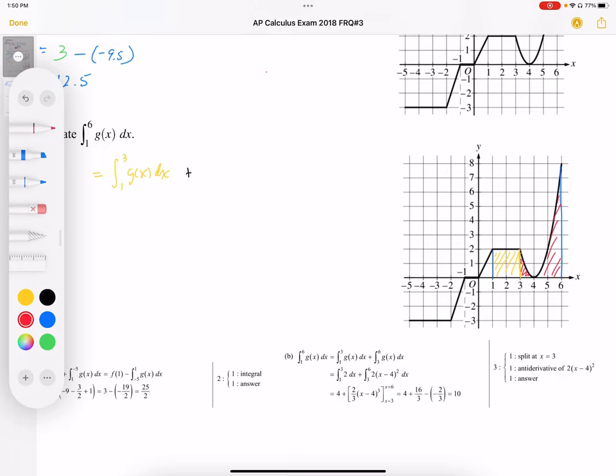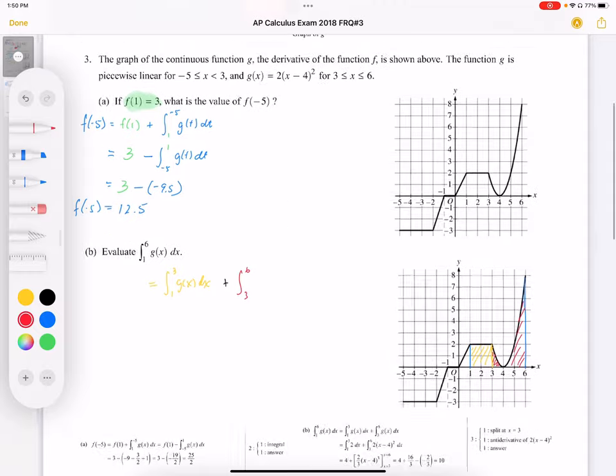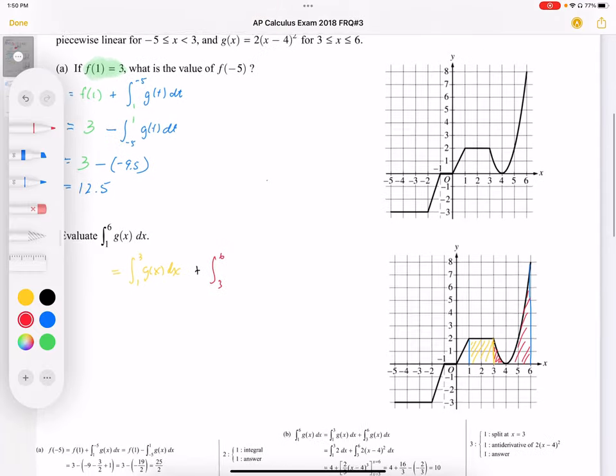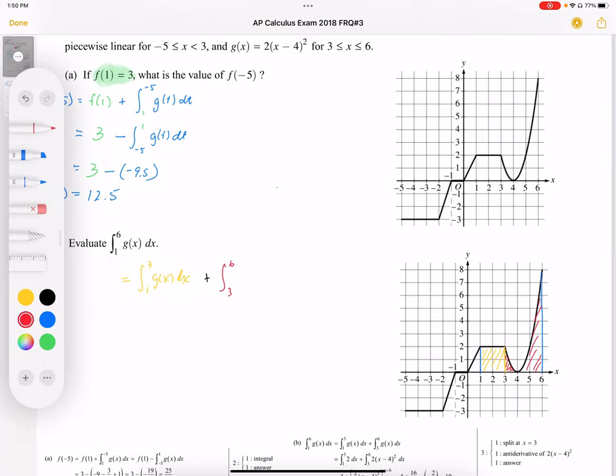Plus the area from 3 to 6 under the g function, which is described as... and we're given the quadratic for this. So I'm just going to write this in terms of this quadratic. The quadratic is 2(x minus 4) squared dx.